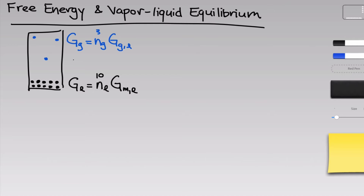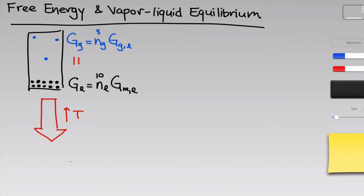Let's imagine that this system is currently at physical equilibrium such that the total free energies are equal to each other — the free energy of the gas equals the free energy of the liquid. But we increase the temperature. What we want to know is what happens to the system as a result of this temperature increase — what are the numbers of moles of liquid and gas at the end? From our discussion last time, it should be intuitive that the number of moles of gas is going to increase due to the temperature increase, but we want to understand why.